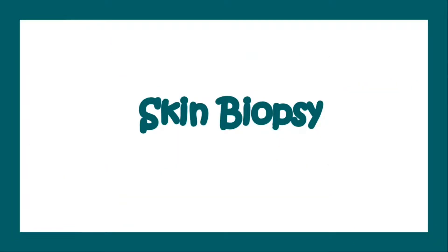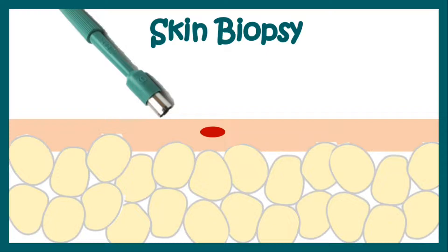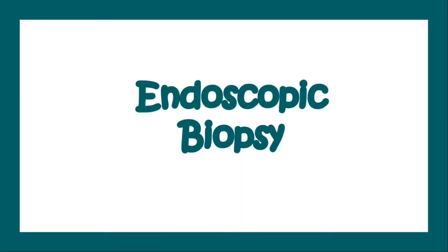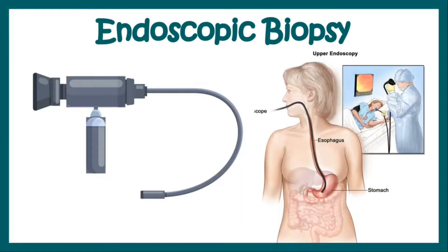Another type of biopsy is known as skin biopsy. We use a skin biopsy machine which punches out the lesion from the skin as a patch and sends this patch with the lesion to the lab for analysis. Another type of biopsy is known as endoscopic biopsy, in which we introduce an endoscope into one of the orifices of the body and that endoscope brings out a chunk of the tissue for analysis.